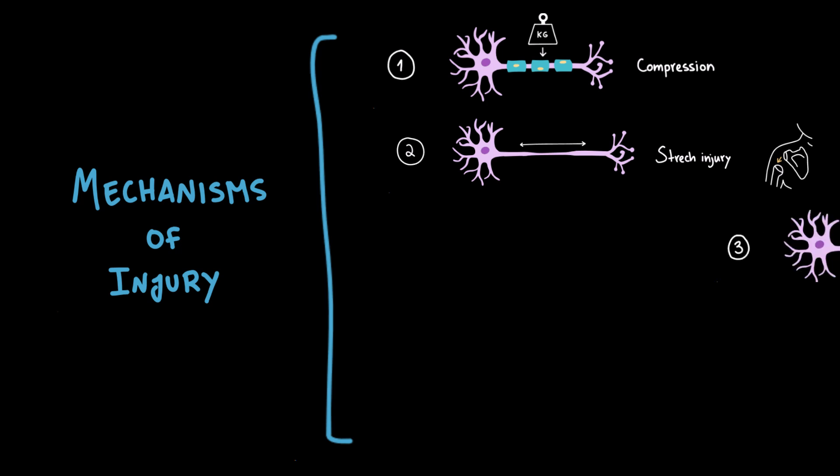Third, there's laceration or transection, which is when the nerve is cut, for example, by a knife wound, glass, or surgical injury. This is the most severe form of injury because the axon continuity is completely disrupted. Whether regeneration is possible depends on whether the connective tissue framework of the nerve is preserved.